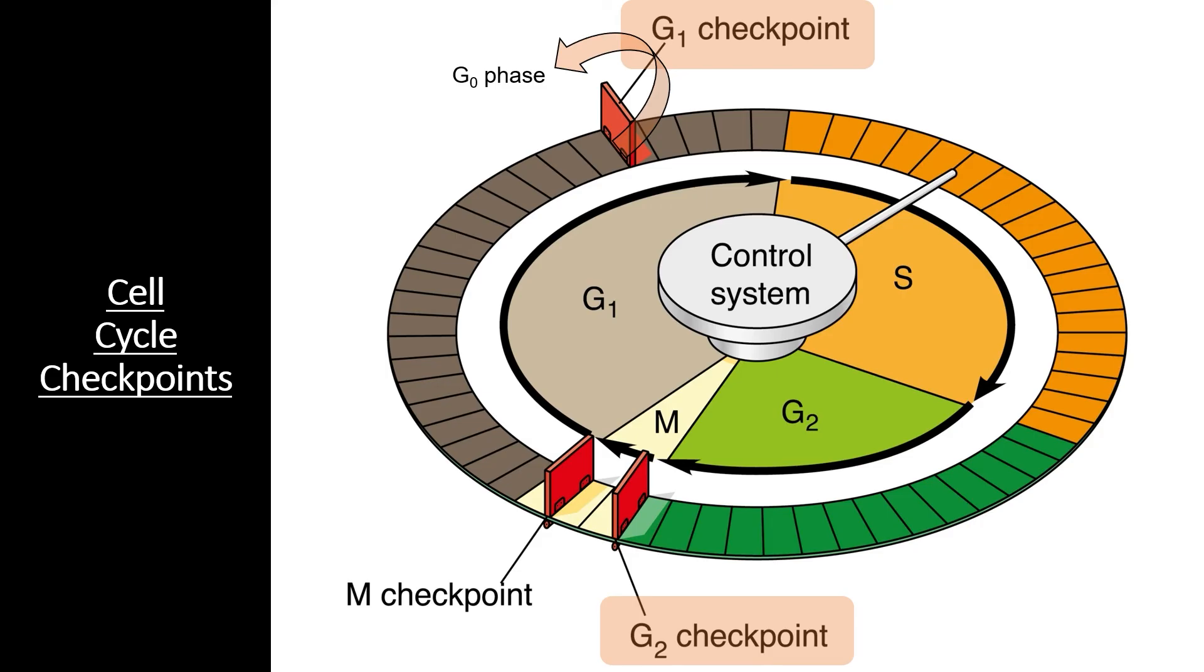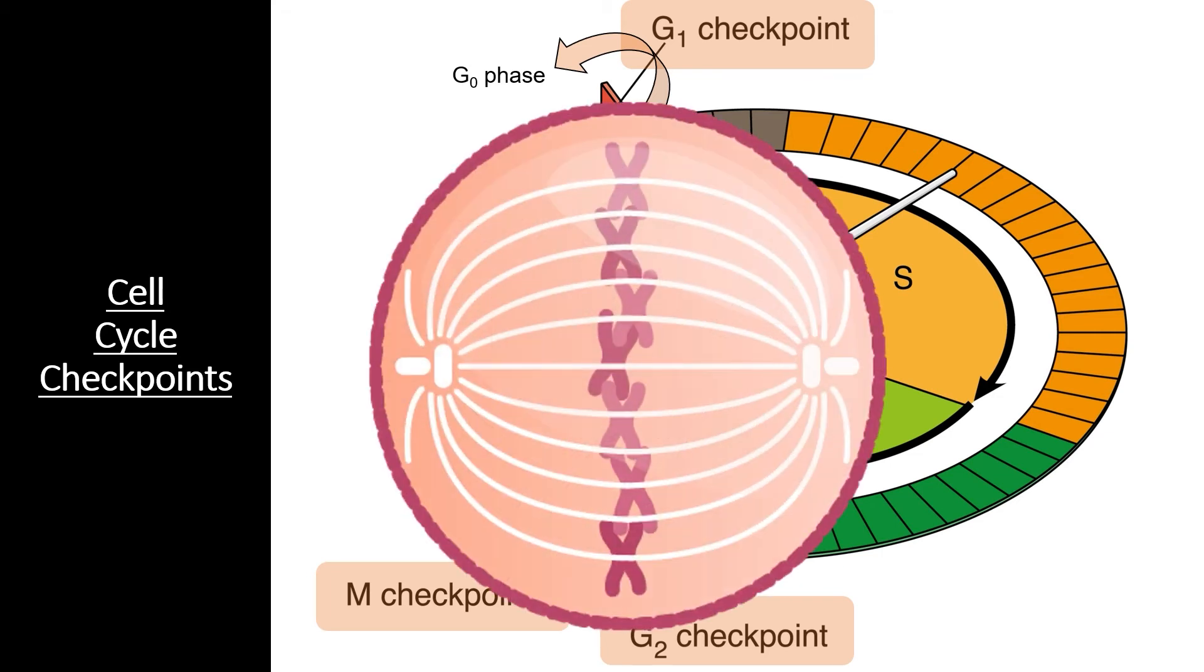The final checkpoint occurs during metaphase of mitosis. Sometimes called the M checkpoint and sometimes called the spindle checkpoint, this checkpoint takes place as the chromosomes line up on the metaphase plate. Essentially, this checkpoint ensures that the chromosomes are going to be evenly divided so both new cells have a full genetic code. We'll see exactly how these checkpoints take place and the regulation of the cell cycle in section 4.7.